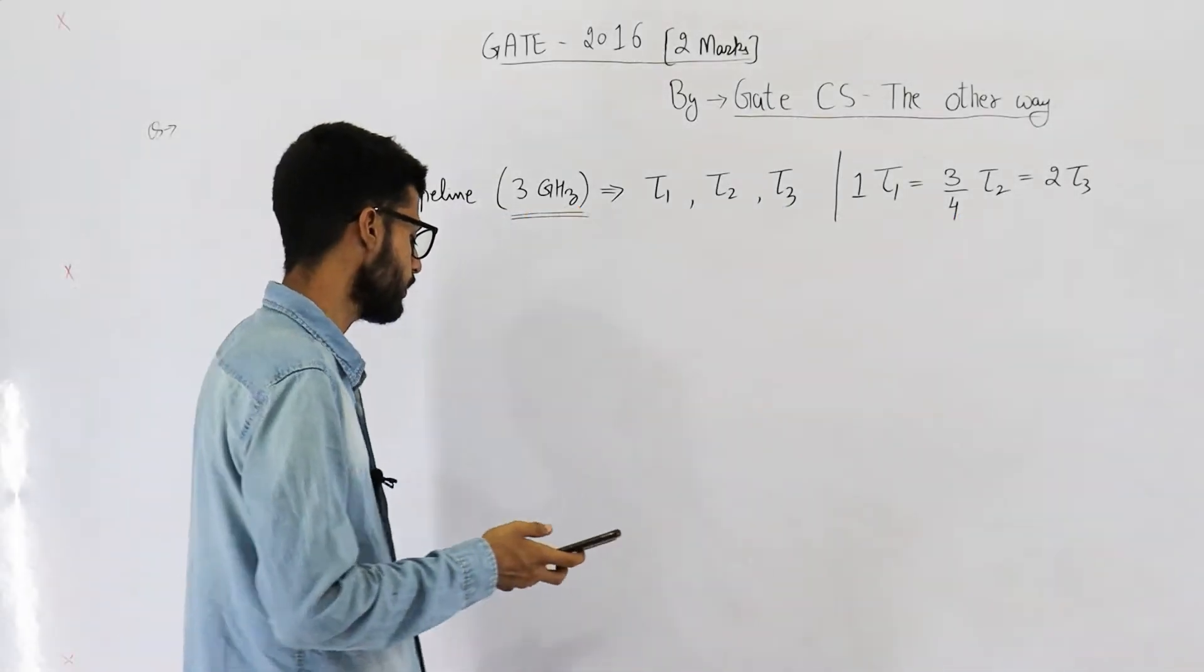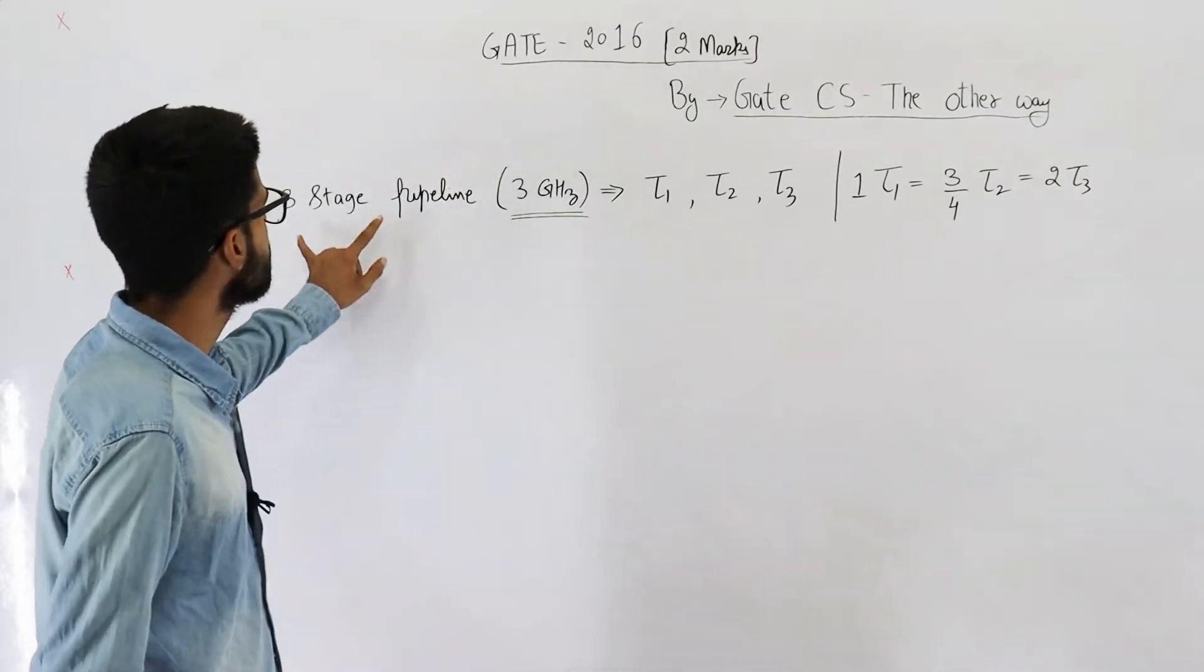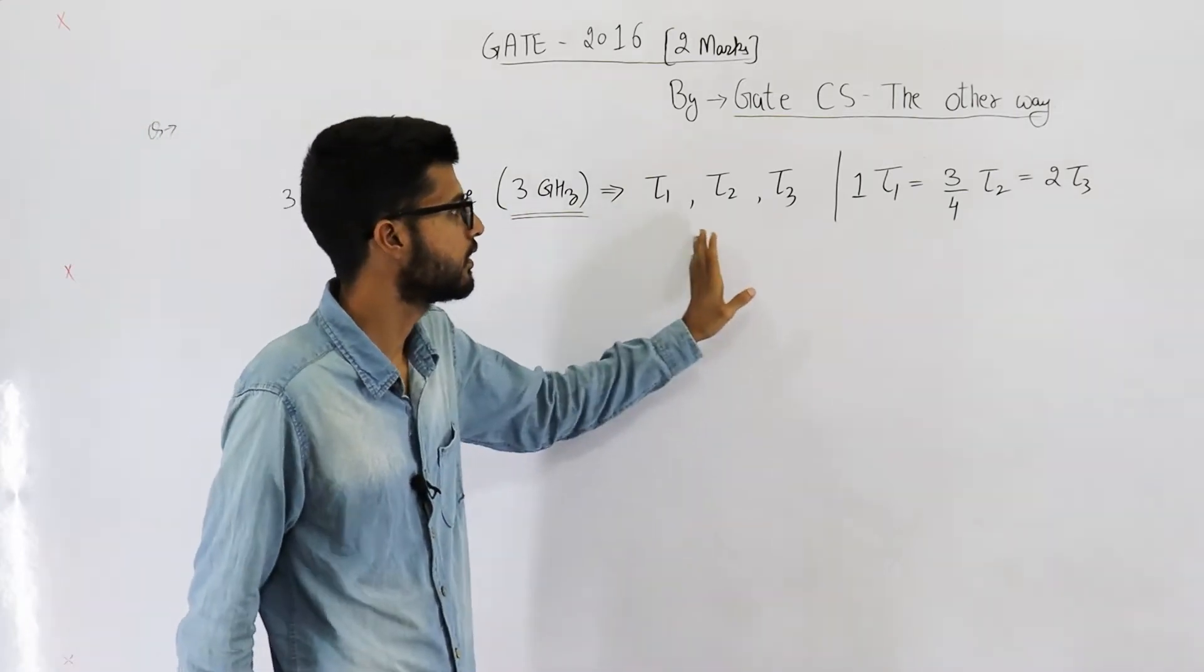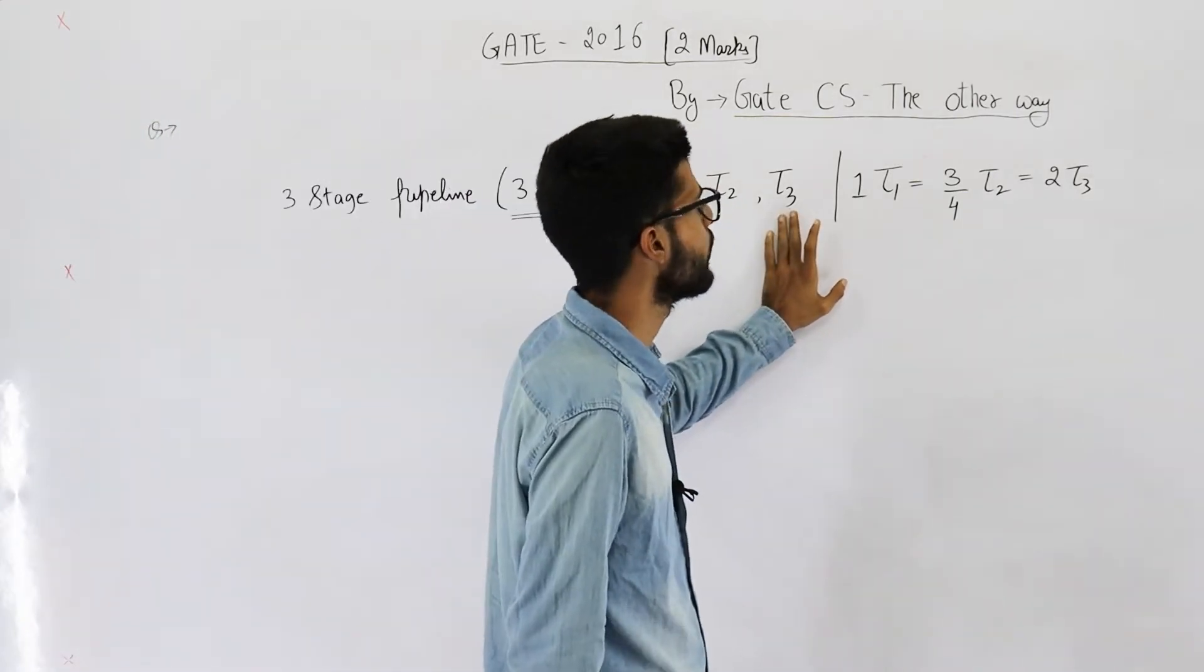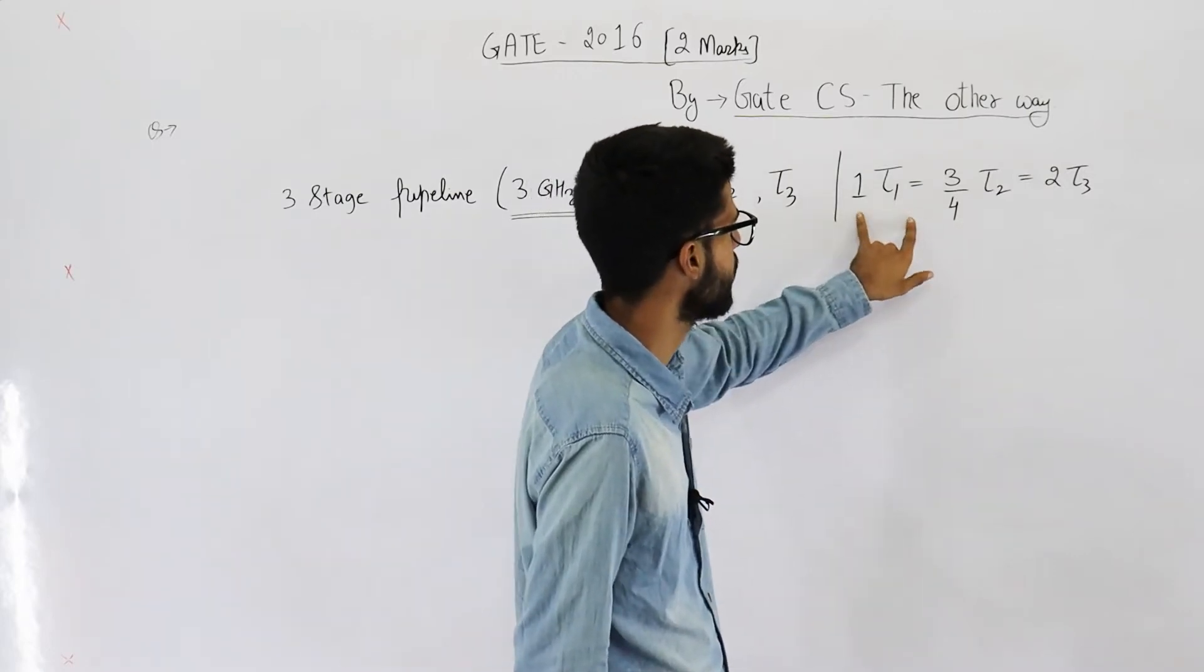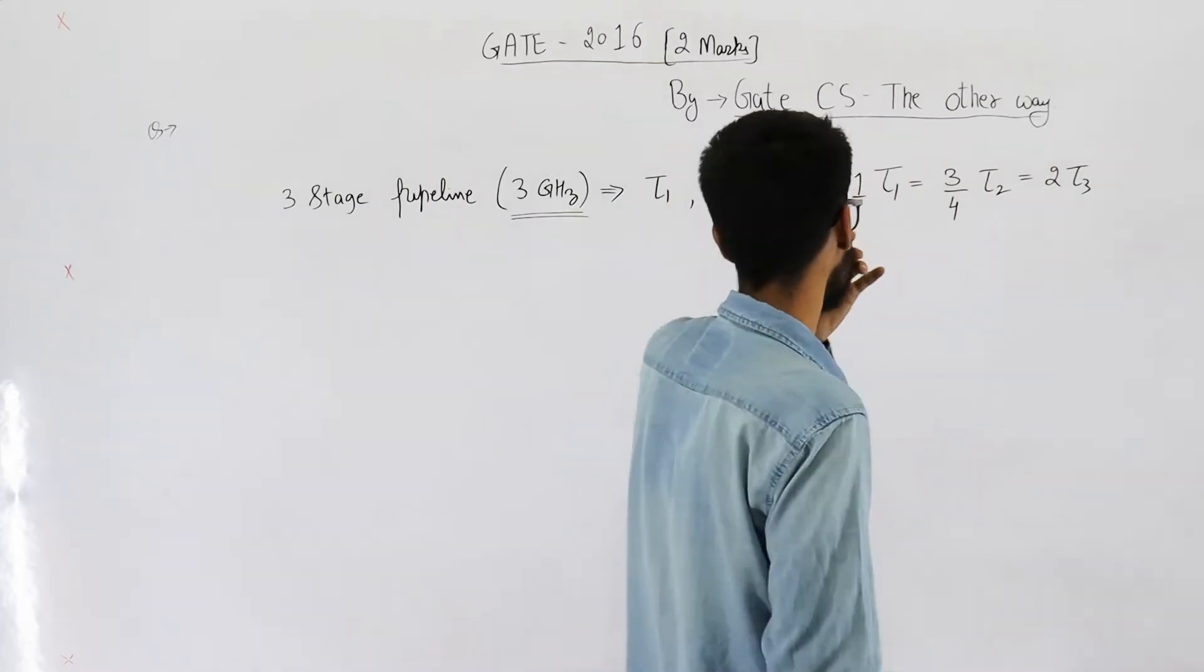So you are given that there's a 3 stage pipelined processor running at 3 GHz with these as the stage delays. They've also given the relation between these three. It is tau1 is equal to 3 by 4 tau2 is equal to 2 tau3. Okay, first of all let's analyze this.